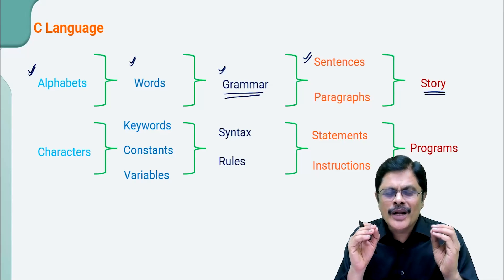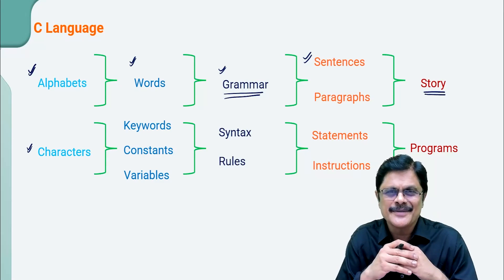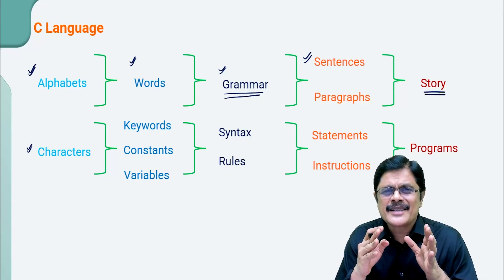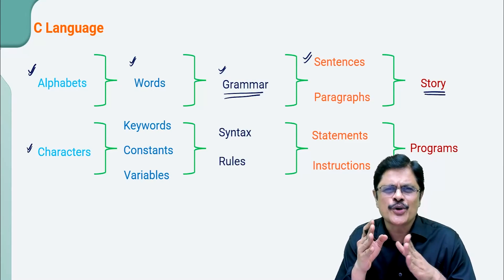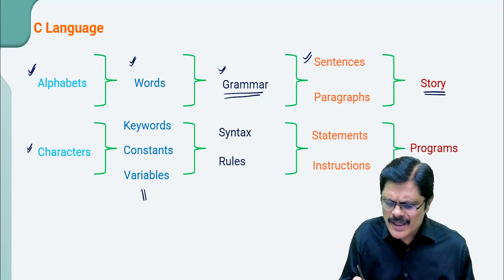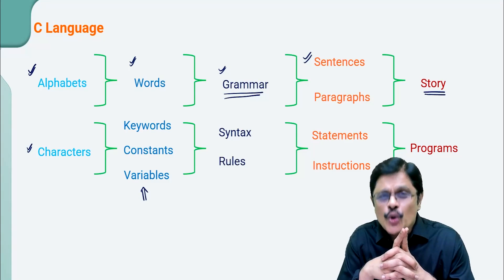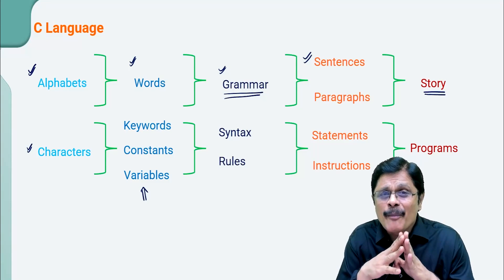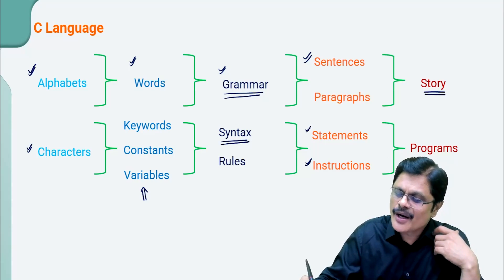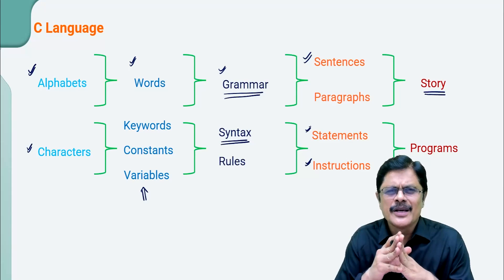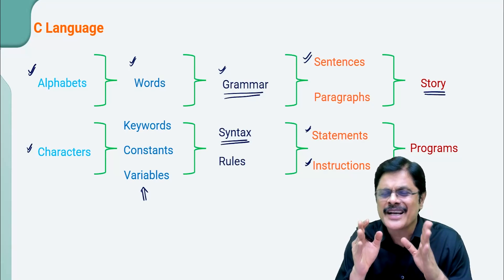Similarly, if you want to learn C language, we need to start with C characters. The C characters can be combined in a meaningful manner to form what is known as tokens — some of the tokens like keywords, constants, etc. And these tokens are combined using syntax rules to create instructions or statements. If you are good with your syntax, you can write proper C statements or instructions.